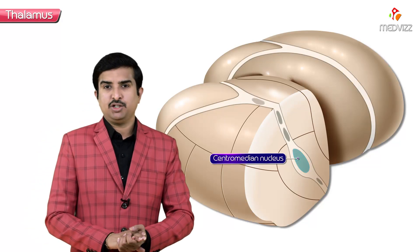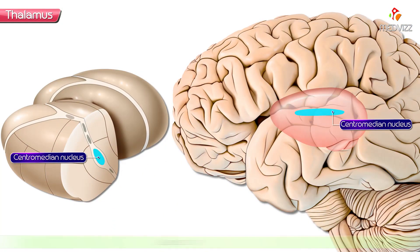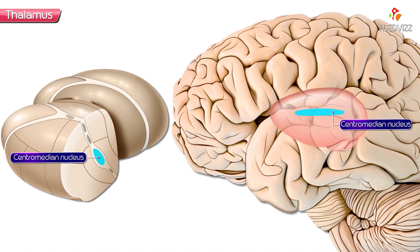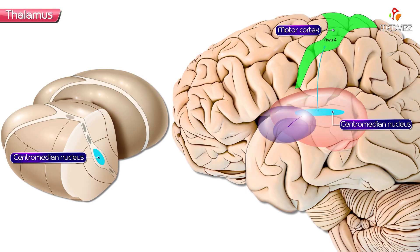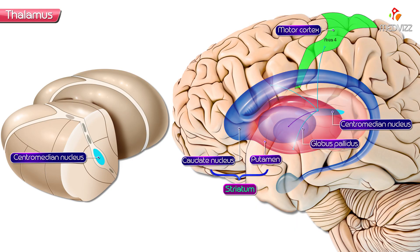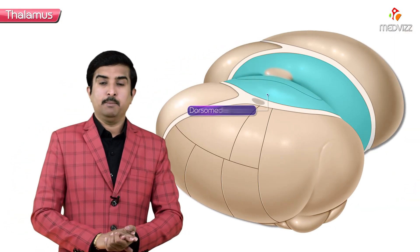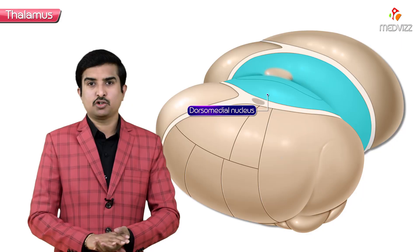Next is the centromedian nucleus, which is the largest intralaminar nucleus. It is reciprocally connected to the motor cortex — Brodmann area 4. The centromedian nucleus receives input mainly from the globus pallidus and projects fibers to the striatum — that is, the caudate nucleus and putamen — and also projects diffusely to the entire neocortex.